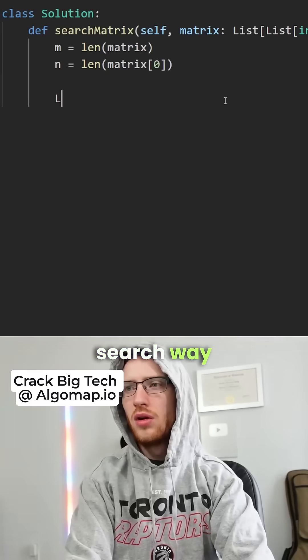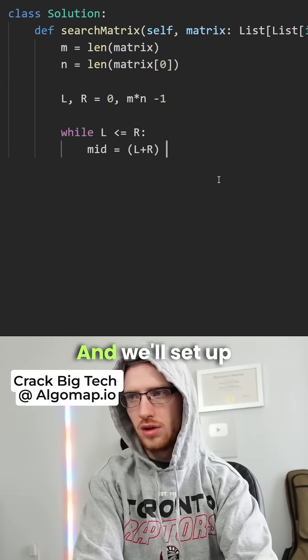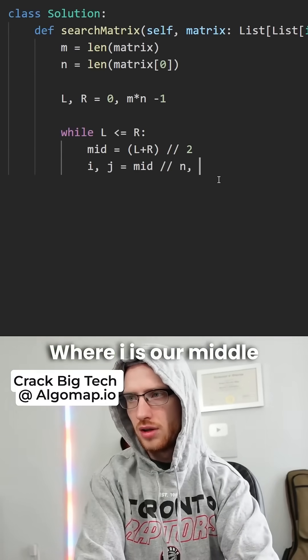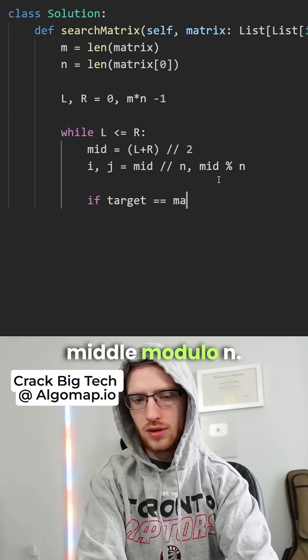We'll get our two pointers, l at the beginning and r at the end, and set up a pretty traditional binary search with our midpoint. Now the trick is to get i and j, where i is our middle integer division by n, and j is our middle modulo n.